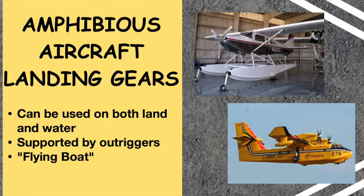Amphibious aircraft can land either on land or on water. On some aircraft designed for dual usage, the bottom half of the fuselage acts as a hull, usually accompanied by outriggers on the underside of the wings near the tips to aid in water landing and taxi. Main gear that retracts into the fuselage is only extended when landing on the ground or a runway. This type of amphibious aircraft is sometimes called a flying boat.